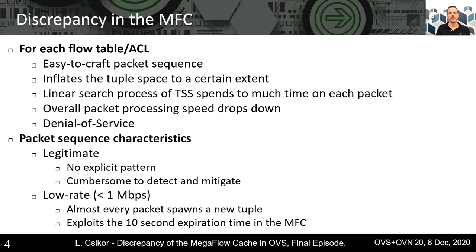The discrepancy we revealed in the previous episodes is that for each flow table there exists an easy-to-craft packet sequence which, when sent to OVS, will inflate the tuple space to a certain extent such that for classifying each packet, the algorithm requires an unaffordably long time, eventually leading to denial of service for all workloads connected to the same OVS. The particularly interesting aspect of the packet sequence is that it looks completely legitimate on the wire without any explicit traffic patterns, therefore it is non-trivial to detect or even mitigate.